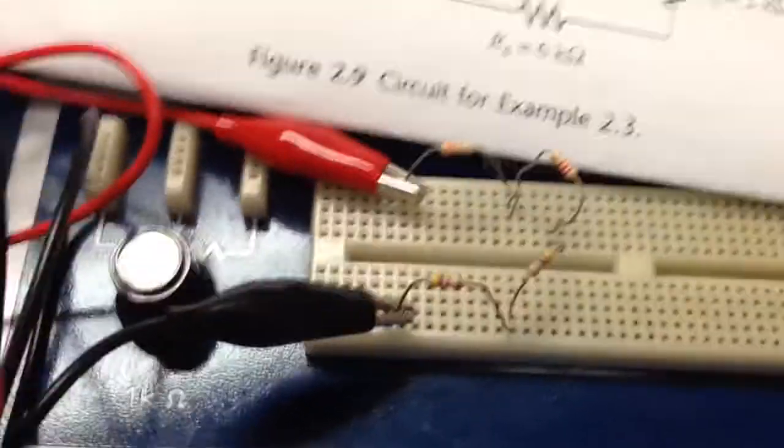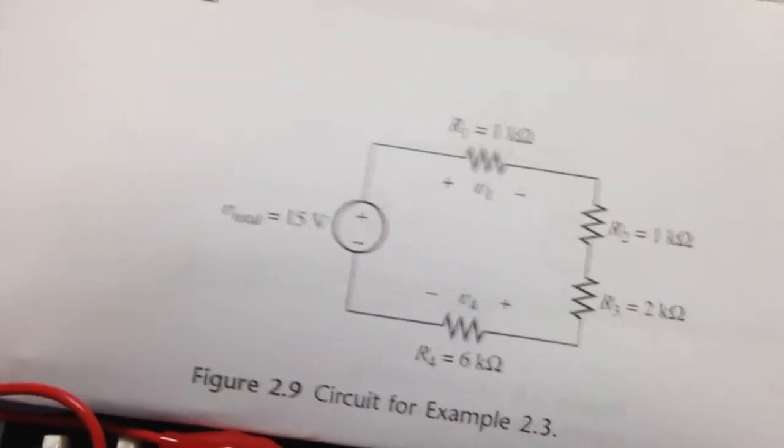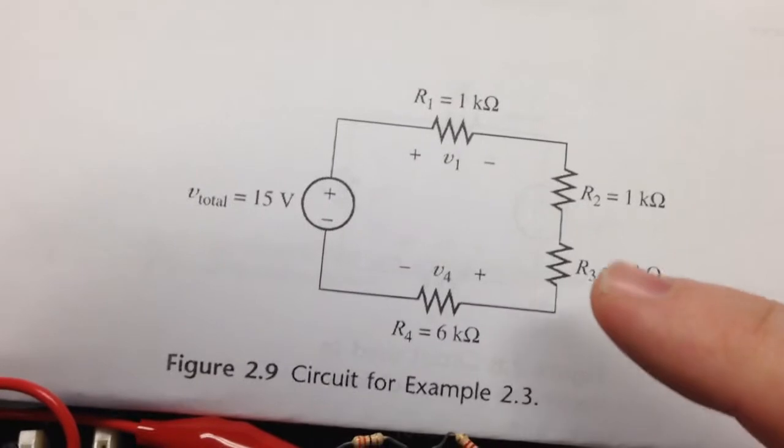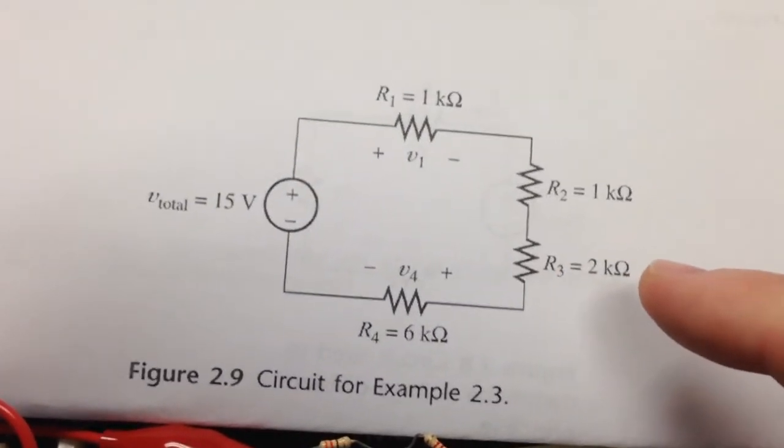You'll also find that if you take the power supply voltage, in this case 15 volts, and multiply it by the resistance of the resistor you're measuring across, let's say the 2 kiloohm resistor,